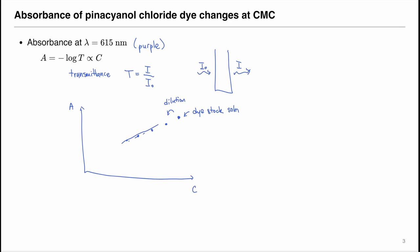We can fit a curve onto it. However, at the critical micelle concentration, say it's here at the CMC, the slope of the curve changes.